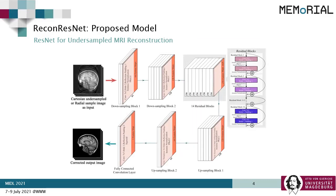Here we have proposed a ResNet-based model named ReconResNet, where the under-sampled image with artifacts is supplied as input to the network, and the fully sampled image is compared with the output of the network for calculating the loss. Inside the model, the input is down-sampled twice, and then 14 residual blocks are applied. Each block consists of a pair of convolution and instance normalization layers, separated by a parameterized ReLU and a spatial dropout with the probability of 0.2. After the residual blocks, the image is again up-sampled two times to obtain the original image size, and finally a fully connected convolution layer is applied to obtain the final output.